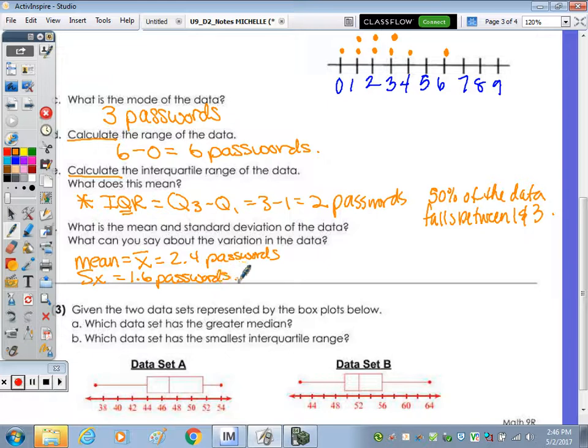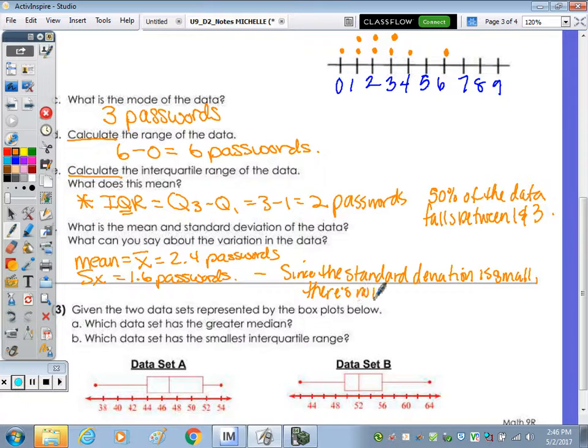So what can you say about the variation? Do we have a lot of variation within our data if the standard deviation is small? No. No. So I'm going to say, since the standard deviation is small, there's not much variation in the data.